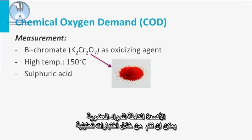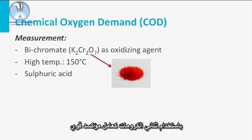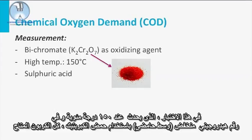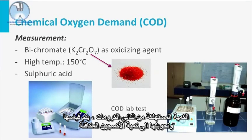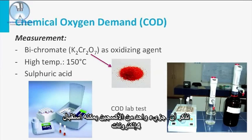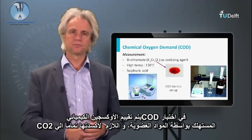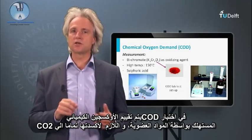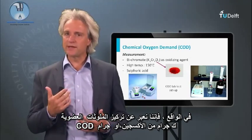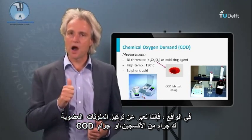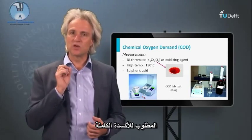The complete oxidation of organic matter can be accomplished in an analytical test, using bichromate as a strong oxidizing agent. This test is carried out at 150 degrees Celsius and at low pH using sulfuric acid, where all available carbon will be oxidized to CO2. The consumed amount of bichromate is measured and recalculated to oxygen equivalents. Remember, one molecule of oxygen can accept four electrons. In the COD test, we assess the chemical oxygen demand of organic matter being fully oxidized to CO2. We express the concentration of organic pollutants in gram oxygen, or gram COD, that is required for the full oxidation.